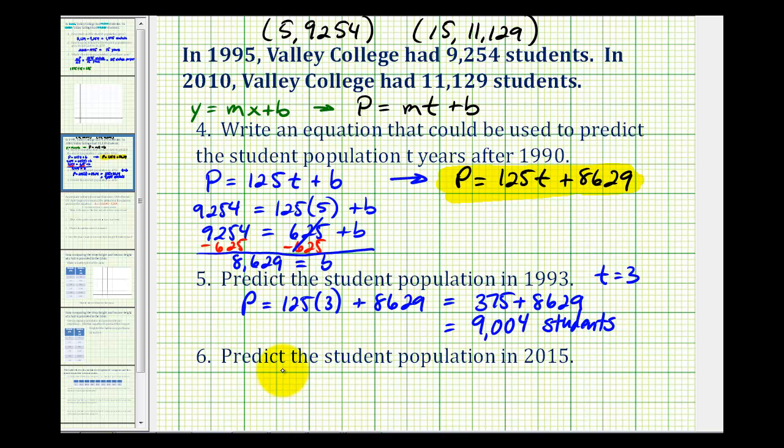And the last question, we want to predict the student population in the year 2015. Well, 2015 is 25 years after 1990. If we can't see that, we can always find the difference. 2015 minus 1990 is equal to 25. So now we'll use the same prediction equation and substitute 25 for t. So we'll have p equals 125 times 25 plus 8,629.